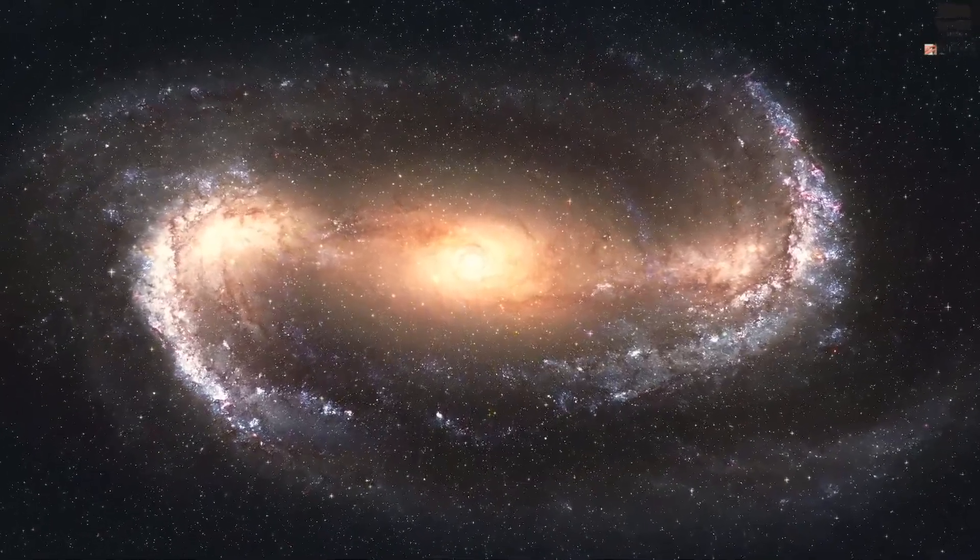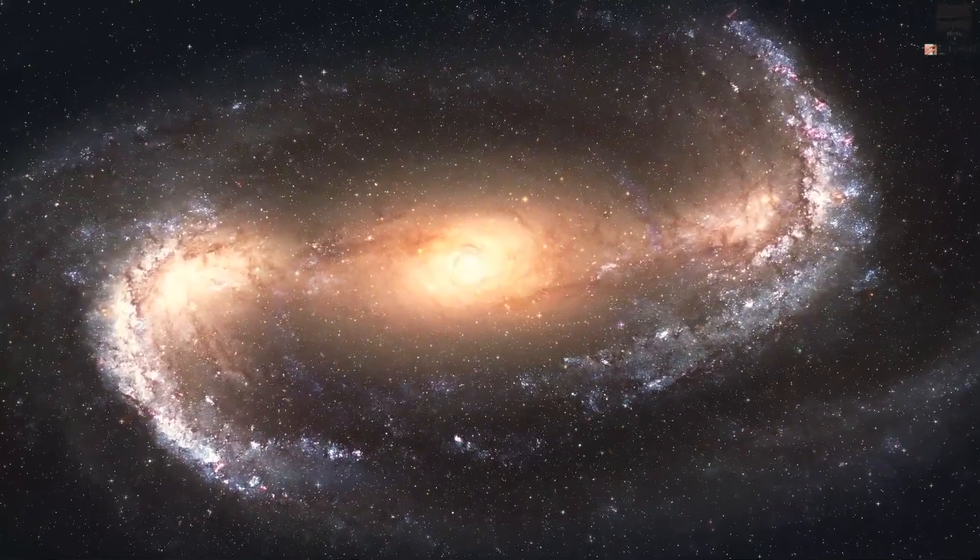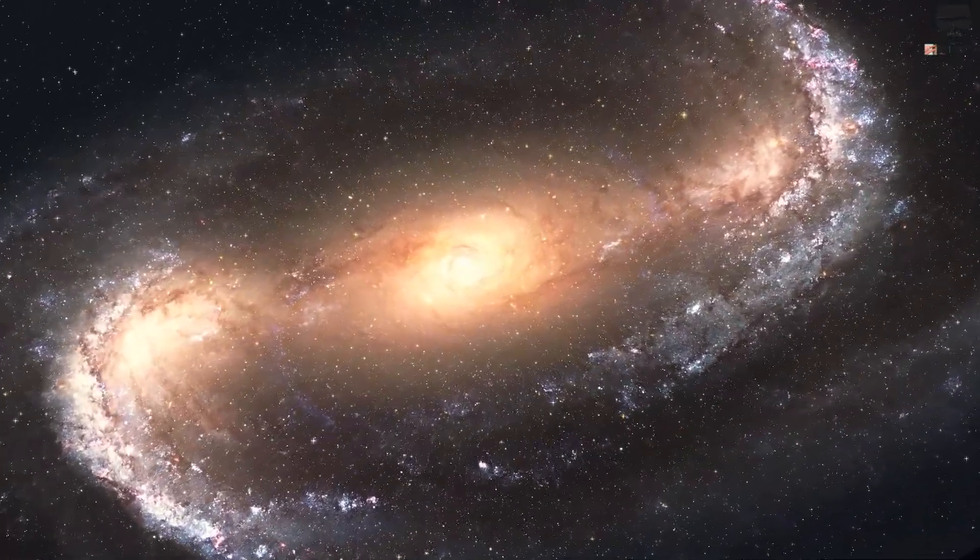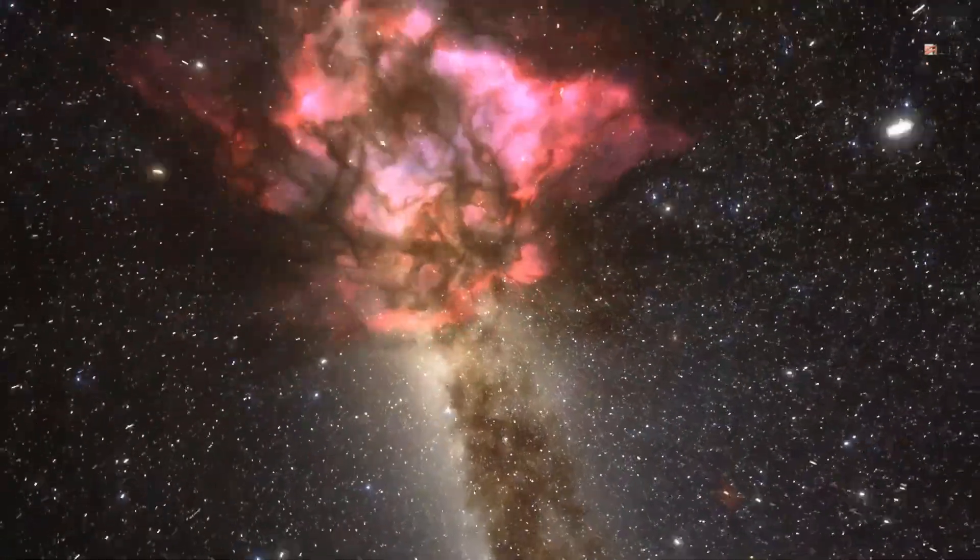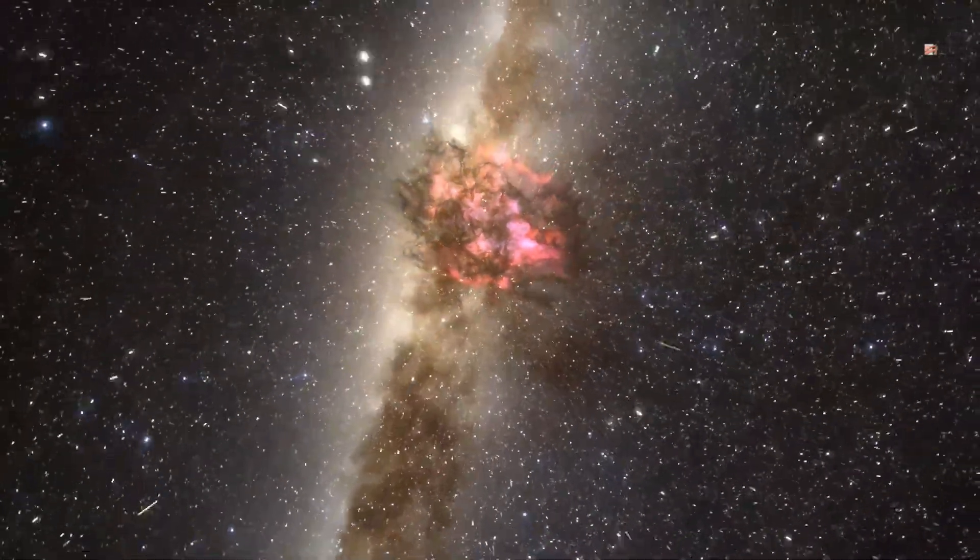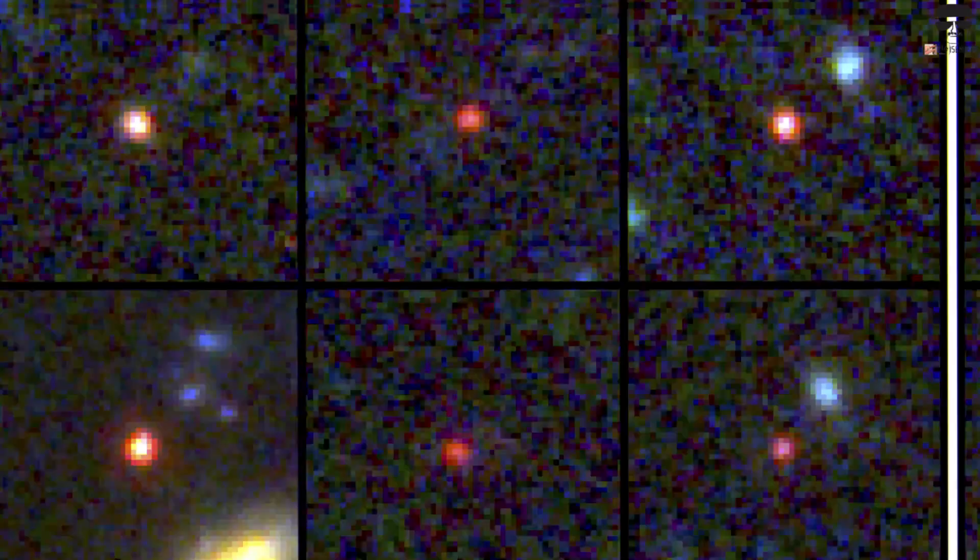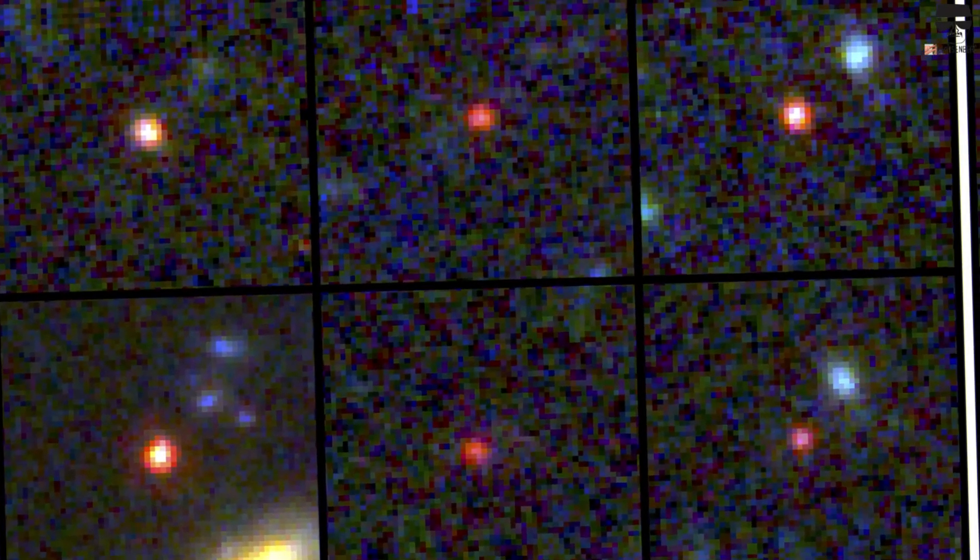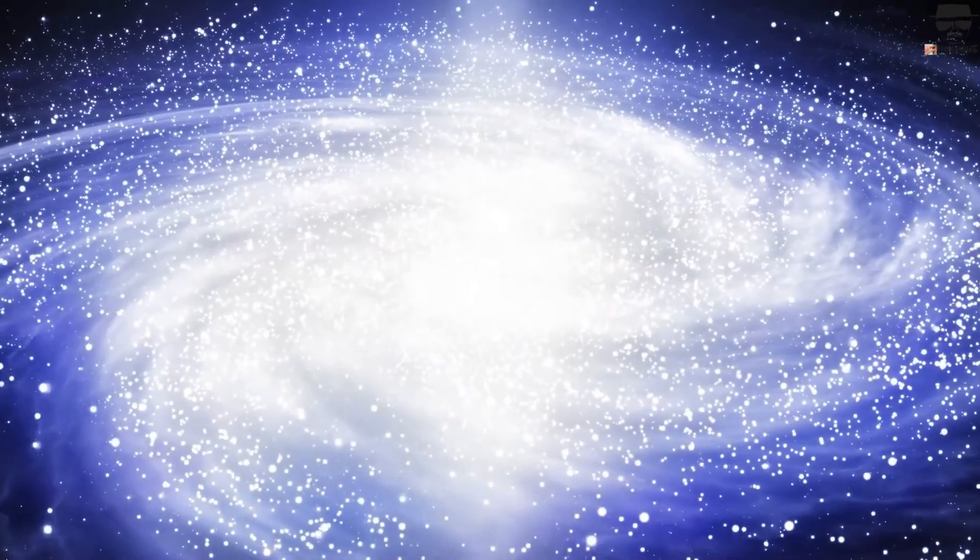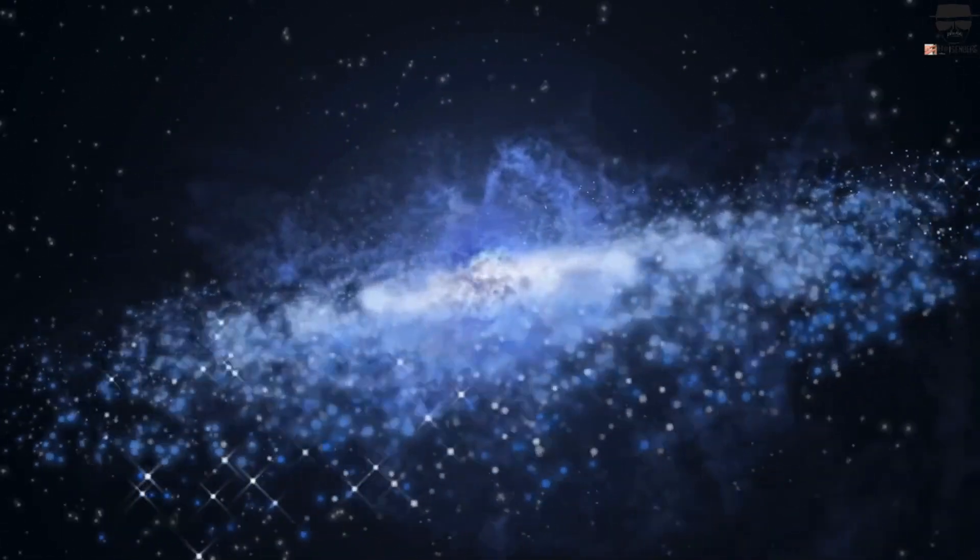And yet, while most galaxies, including our own, have tremendous amounts of dark matter, there are a few cosmic outliers. Initially, the first couple were disputed, but a recent study claims to have discovered six new ones that have, as best as we can tell, no dark matter at all. Is this, for lack of a better word, real? And if so, what does it mean?